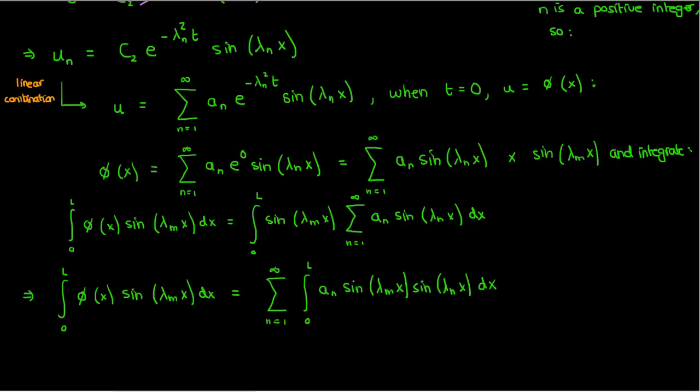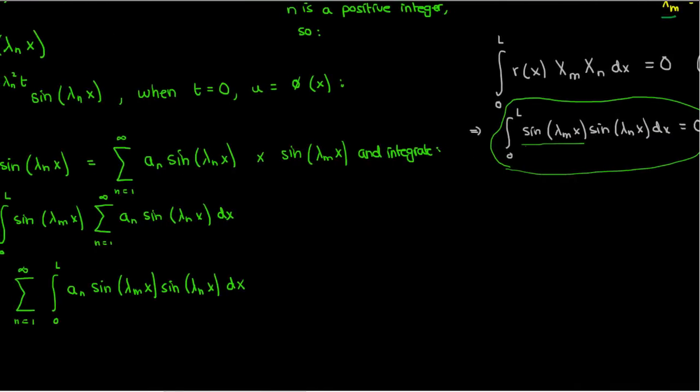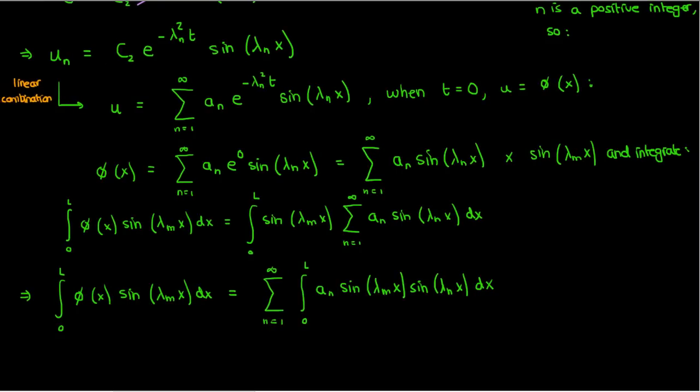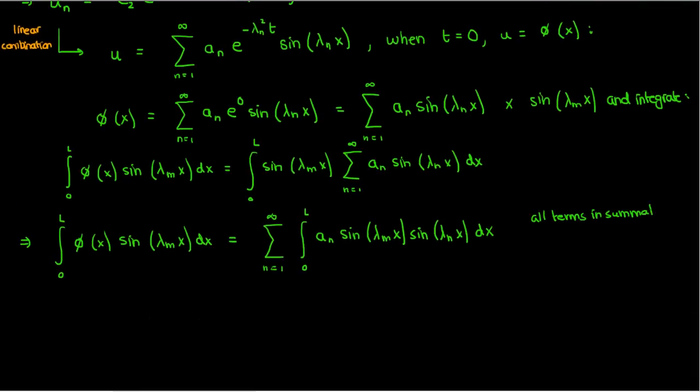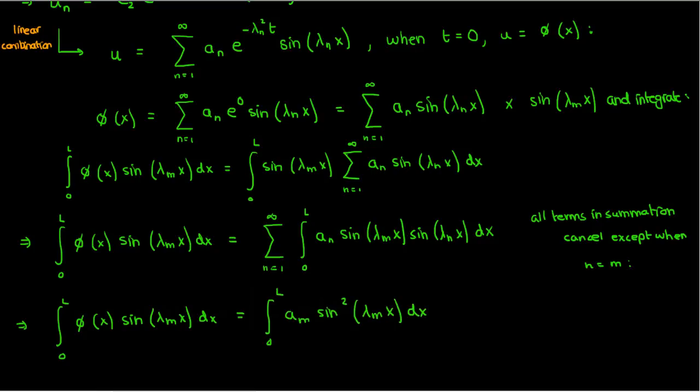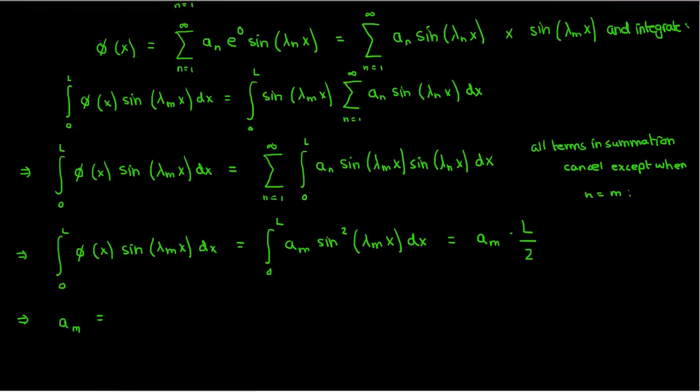Now look what happens when n doesn't equal m. Well, when n and m are both different, we can apply the orthogonality relation from the Sturm-Liouville theorem we just derived to conclude that the integral on the right-hand side will be 0. The only time the right-hand side isn't 0 is when n equals m, which means that every single term in the summation will cancel out, except when n equals m. This ends up hugely simplifying our equation so that now we have the integral from 0 to L of sine of lambda sub m times x times phi of x equals the integral from 0 to L of a sub m times sine squared of lambda sub m times x. If we integrate the sine squared term on the right side, we end up with a sub m times L over 2 on the right. Now if we isolate our coefficient a sub m, we get a sub m equals 2 over L times the integral from 0 to L of sine of lambda sub m times x times phi of x.